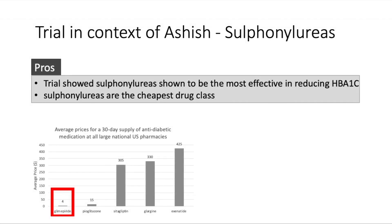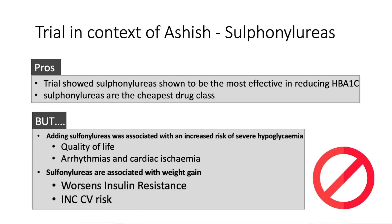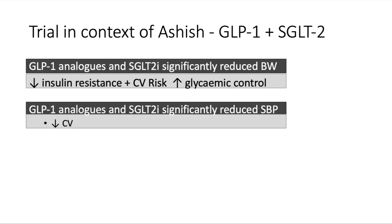Although sulfonylureas were shown to be the most effective in reducing HbA1c and are also the cheapest drug class, it's probably not appropriate for Ashish. This is because the study showed a significantly increased risk of severe hypoglycaemia, which can reduce patient quality of life, and is also implicated in the development of arrhythmias and cardiac ischaemia, increasing cardiovascular risk. In a patient like Ashish who already has high cardiovascular risk due to a previous myocardial infarction, this should probably be avoided. Furthermore, sulfonylureas are associated with weight gain, which further increases cardiovascular risk and worsens insulin resistance.